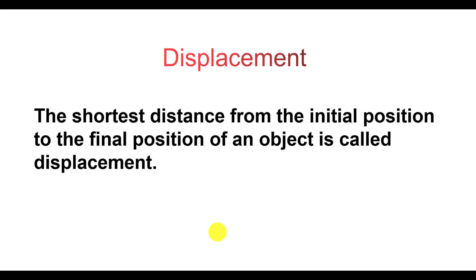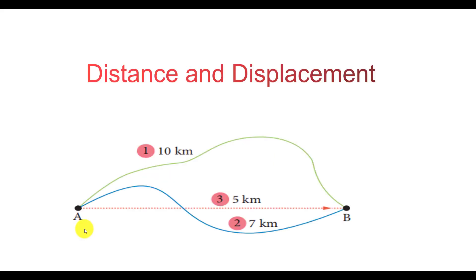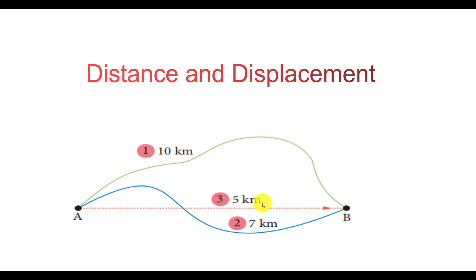Coming to the next concept: displacement. The shortest distance is the keyword here. The shortest distance from the initial position to the final position of an object is called displacement. This picture shows the difference between displacement and distance. Consider point A and point B — this is the shortest distance between the two points. If there is some other work at an intermediate point, you take a longer path to reach point B, which holds 10 km, and the total distance traveled from A to B via that path is 7 km. But if you consider path 3, it is only 5 km.